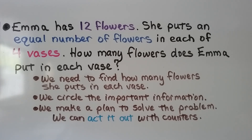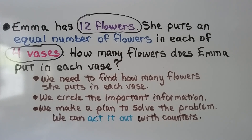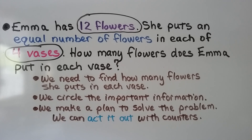Emma has 12 flowers. She puts an equal number of flowers in each of four vases. How many flowers does Emma put in each vase? We need to find how many flowers she puts in each vase. When we circle the important information, there are 12 flowers and there are four vases, and she's going to put an equal number of flowers in each vase. We make a plan to solve the problem — we can act it out with counters.